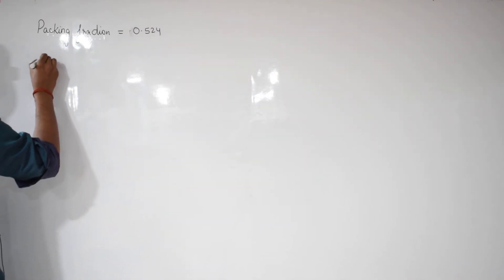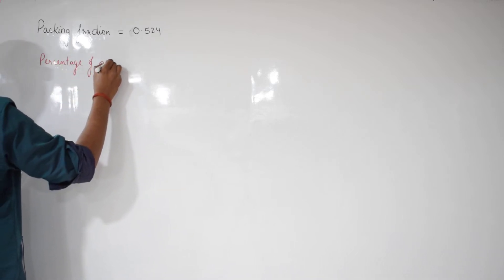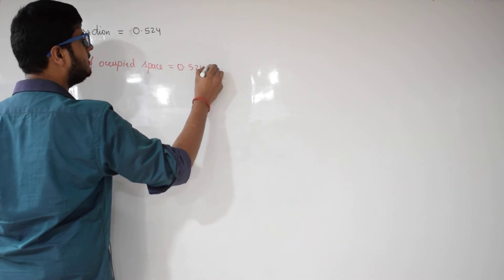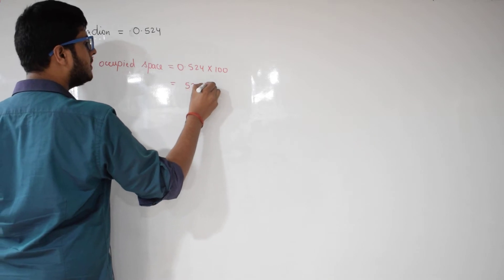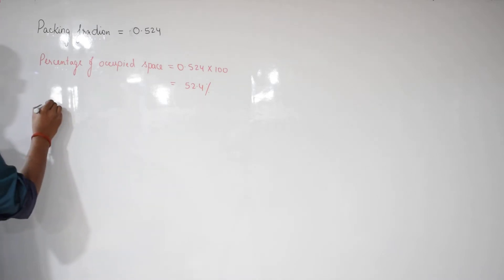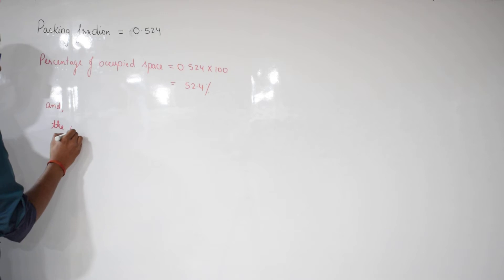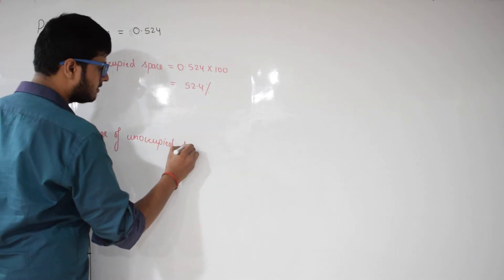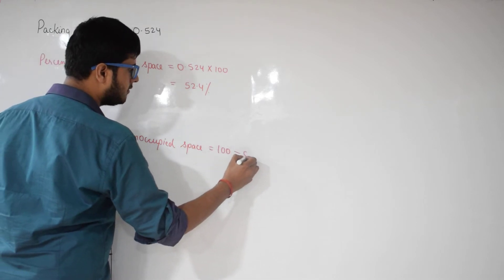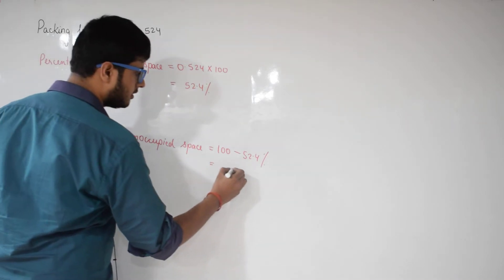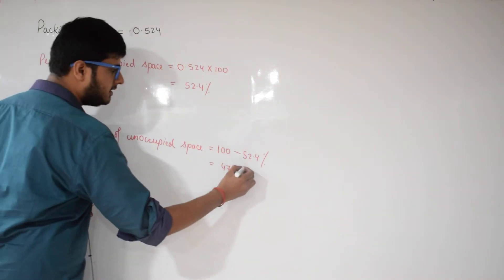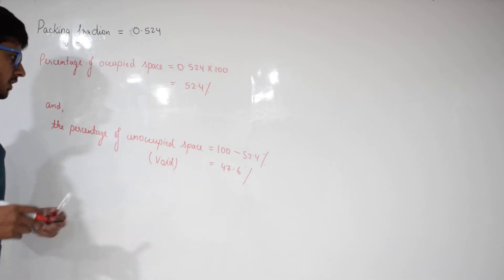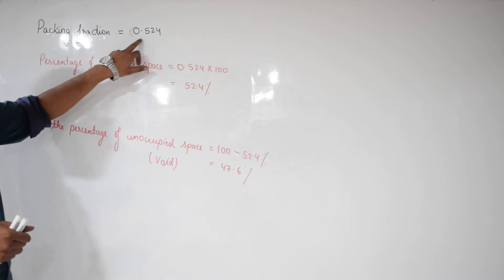If the packing fraction is 0.524, then the percentage of occupied space is equal to 0.524 multiplied by 100, which equals 52.4 percent. The percentage of unoccupied space is equal to 100 minus 52.4 percent, which equals 47.6 percent.